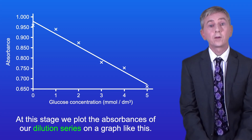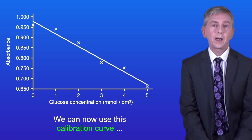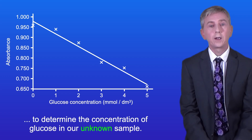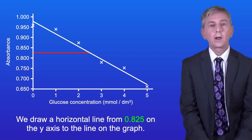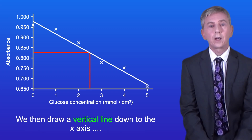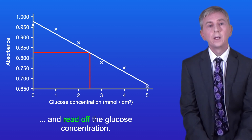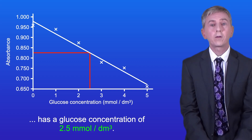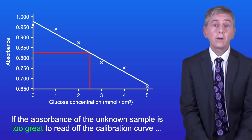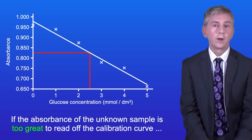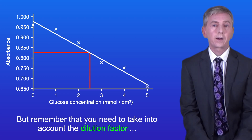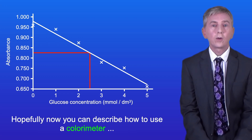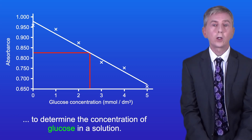We then use the colorimeter to read the absorbances of all of our solutions and plot the absorbances of our dilution series on a graph. We can now use this calibration curve to determine the concentration of glucose in our unknown sample. For example, if the unknown sample has an absorbance of 0.825, we draw a horizontal line from 0.825 on the y-axis to the line on the graph, then draw a vertical line down to the x-axis and read off the glucose concentration — in this case, 2.5 millimoles per decimeter cubed. If the absorbance of the unknown sample is too great to read off the calibration curve, you need to dilute the solution and read the absorbance again, remembering to take into account the dilution factor when determining the concentration of glucose.